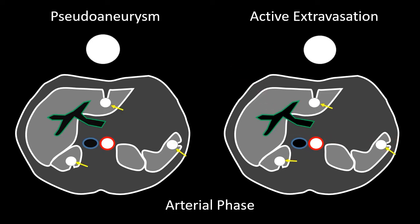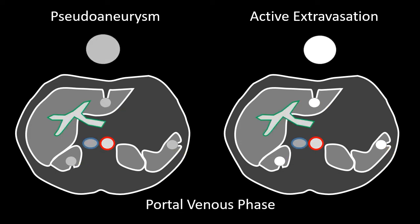As we move into the portal venous phase, the density of the pseudoaneurysm is going to remain similar to that of the aorta, because this is still within what we call the blood pool. Blood is flowing into and out of the pseudoaneurysm, and it is often related to an arterial vessel, so its density will often be similar to the aorta. So the density will decrease substantially to a similar degree that the aorta decreases. In the case of active extravasation, the density may not decrease to the same degree as the aorta, because it is not contained within a vascular space — the contrast begins to pool and does not wash out. So the density of active extravasation in the portal venous phase may be slightly greater than that of the aorta.